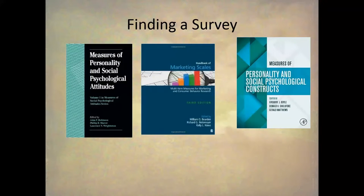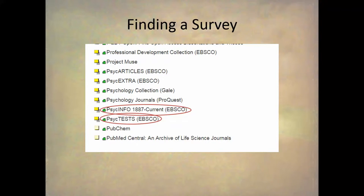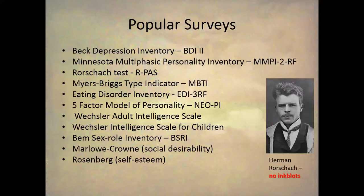If you don't want to construct a test, it's very easy to find one. Here are just a few compilations of tests — each one of these books contains hundreds of tests on different topics. You can also go to PsycInfo and through the advanced search just search for tests, or there's PsycTests, which is a database with just psychological tests. You can also use one of the more popular surveys: the BDI, the Rorschach, the Myers-Briggs, or the five-factor model. There are many existing ones.